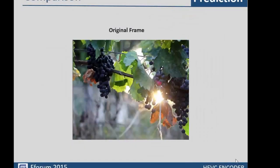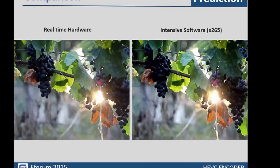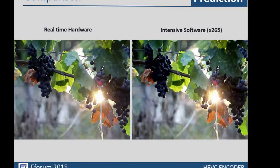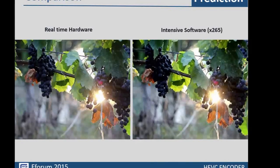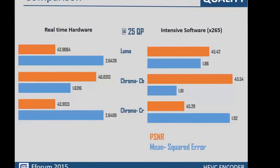So how do our results look? On the left, you see a resulting frame from our encoder, and on the right, a resulting frame from the x265 encoder — a widely used free software encoder. There is no visible difference to the naked eye. Here you also see a comparison of the two encoders using PSNR and mean square error metrics.